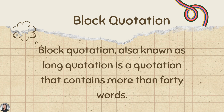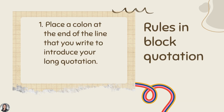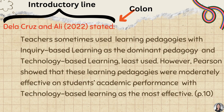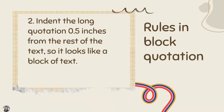You can copy that exactly as long as you make use of block quotation. How to do it? First rule: place a colon at the end of the line that you write to introduce your long quotation. Second rule: indent the long quotation 0.5 inches or 5 spaces from the rest of the text so it looks like a block of text.